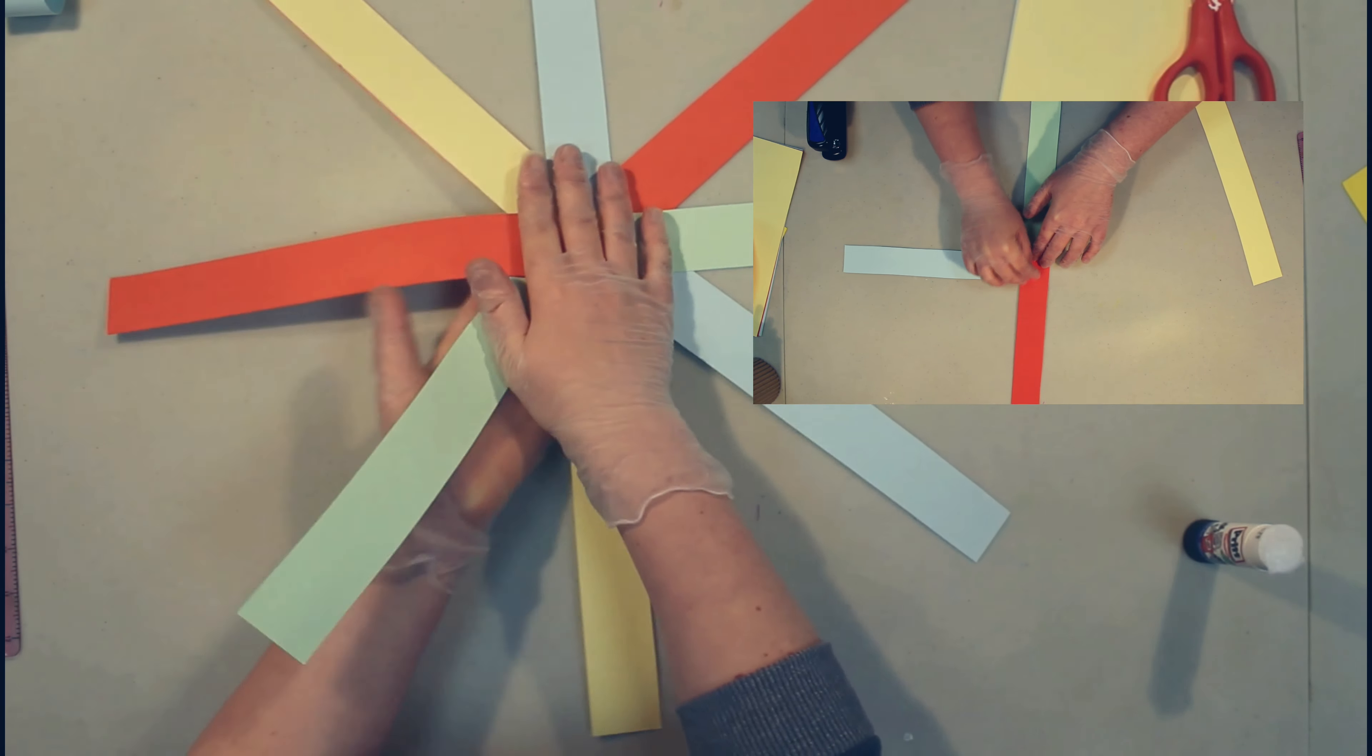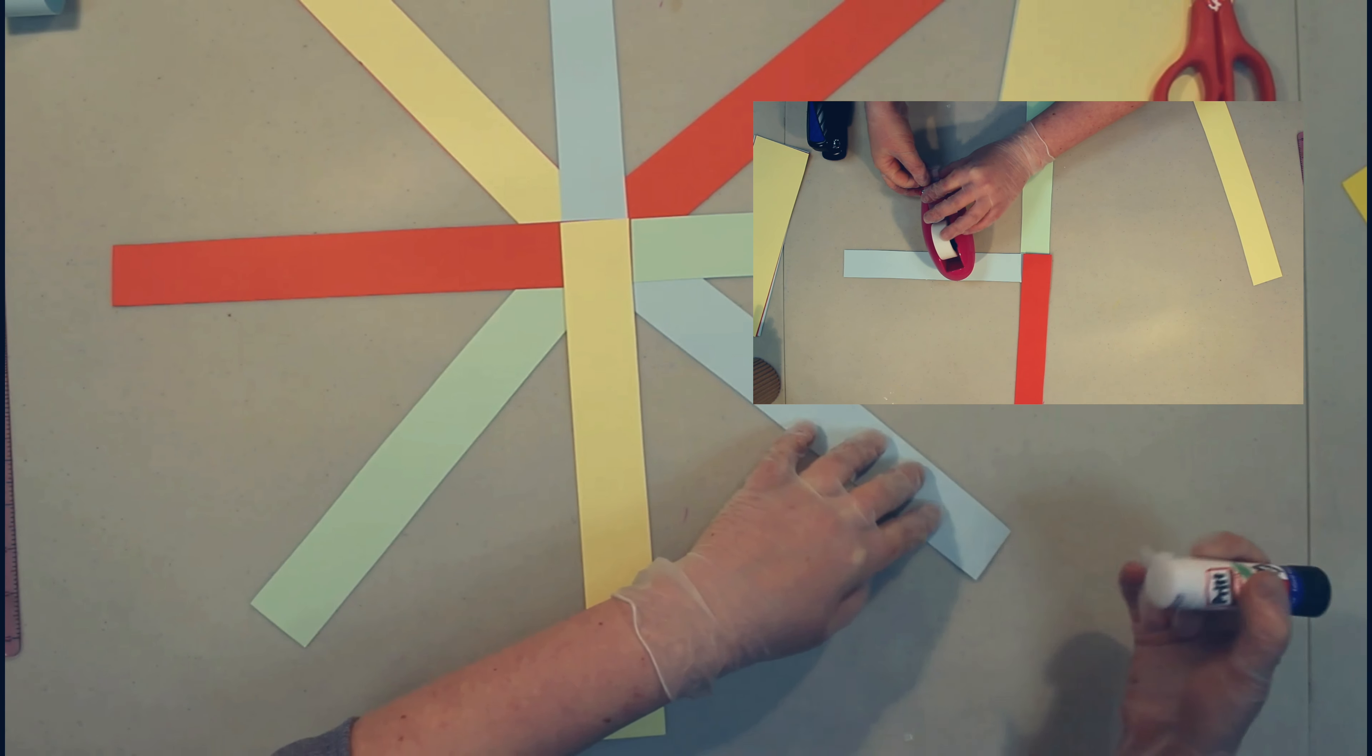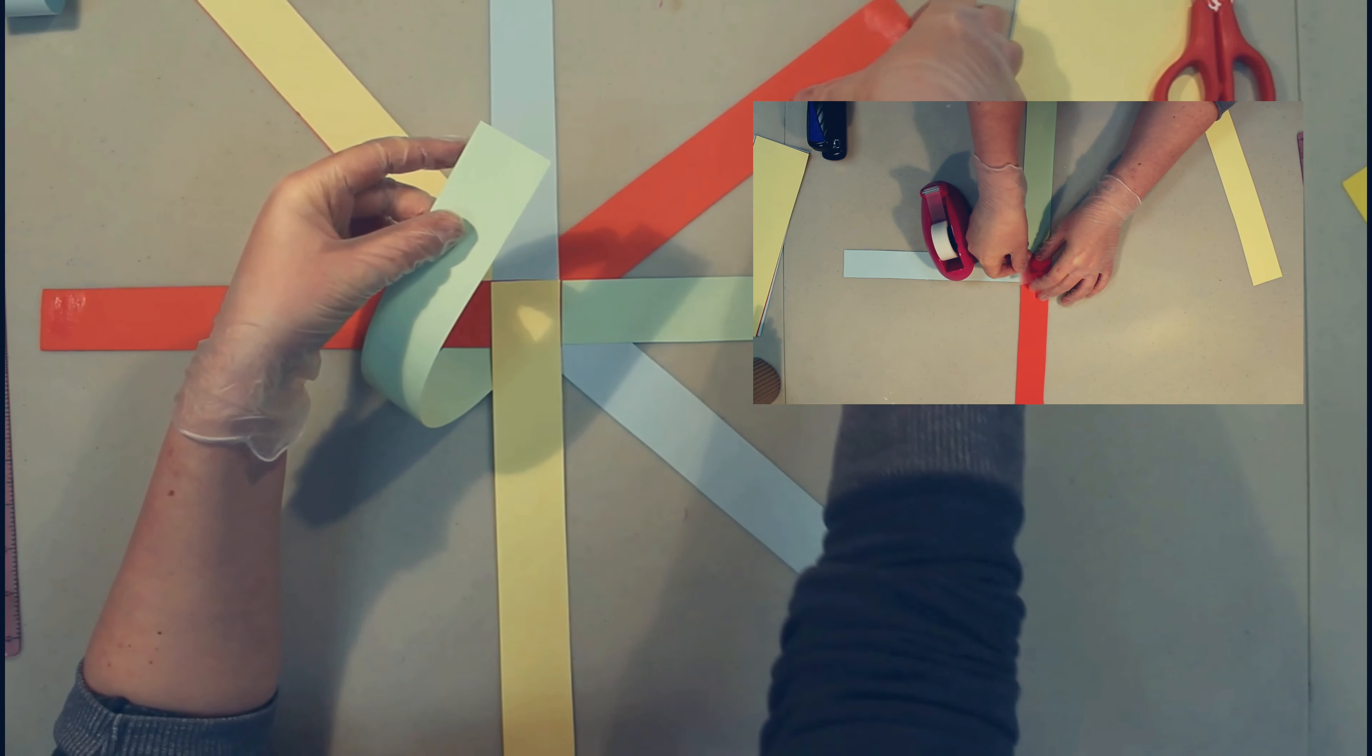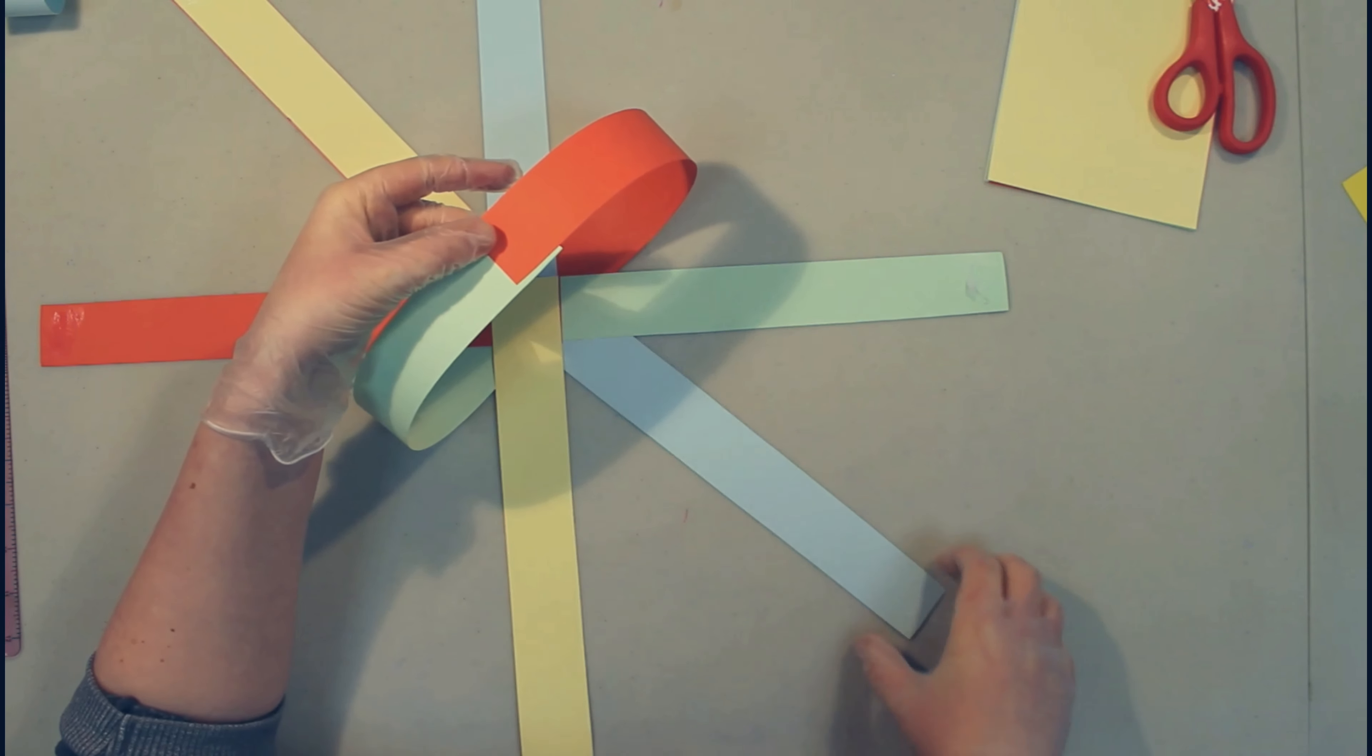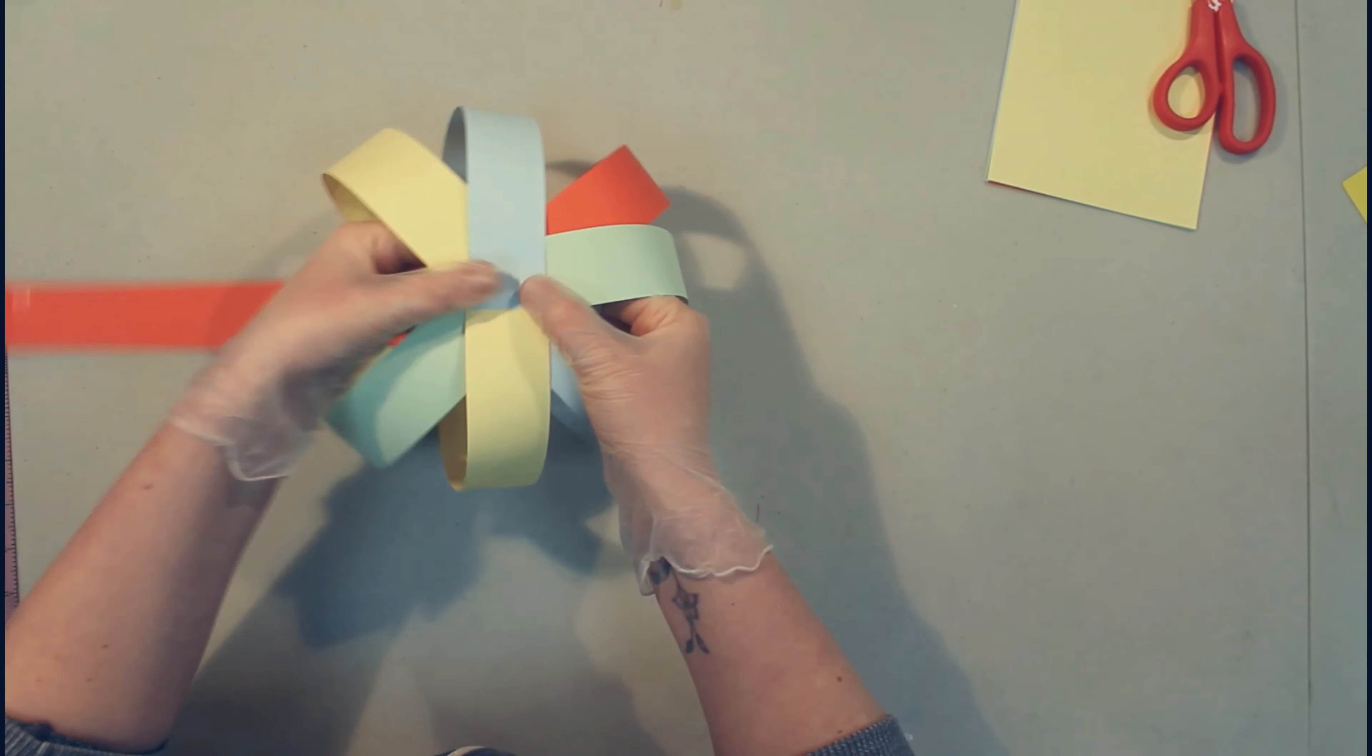Now flip it over and just add some glue to each end of each strip. Once that's done start sticking them together from the top. This will create a kind of a lantern style.